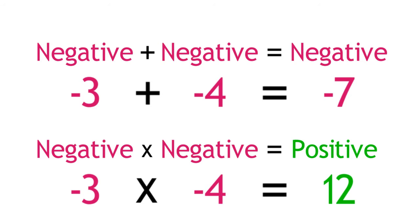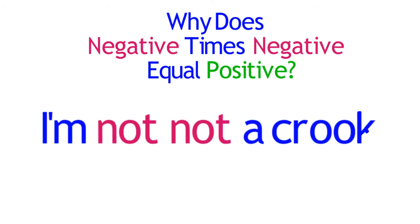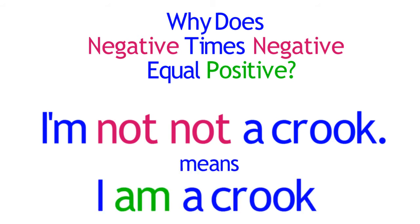So if this quick explanation works for you, you don't have to watch the rest of the video. The sentence, I am not not a crook, to paraphrase the famous statement by President Nixon, means I am a crook, so the two nots, two negatives cancel to become a positive, and we do that every day. We understand that.